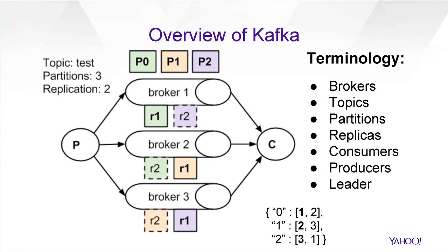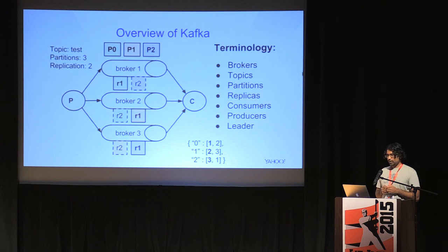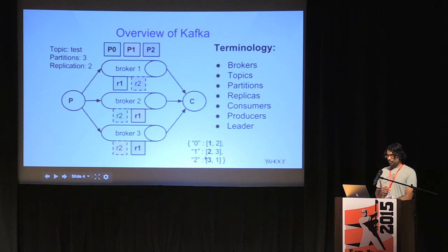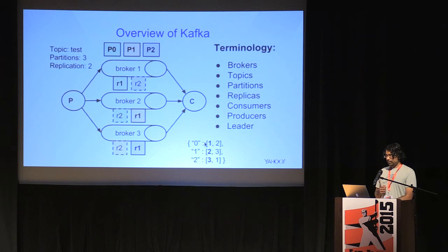Let's take an example cluster here. We have a three-node cluster, and we want to create a topic called test with three partitions with a replication factor of two. So you can see we have P0, P1, and P2 — those are the three partitions. Here you can see what the JSON representation might be for the partition assignments, where for partition zero we have brokers one and two, with broker one as the leader. The leader is responsible for all reads and writes to that partition, and the other replicas pull the leader for updates.